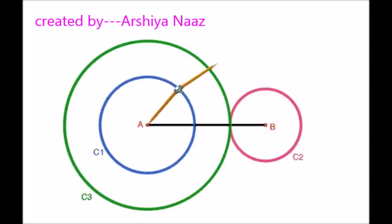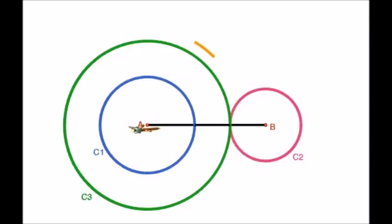Now we have to draw perpendicular bisector for the line segment AB. For this, take the radius more than half of line AB, and with centers A and B draw the arcs which intersect each other.